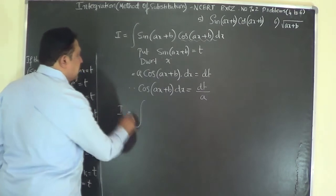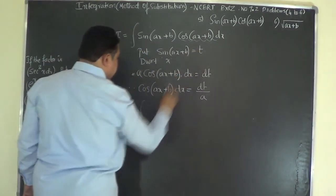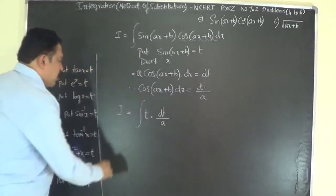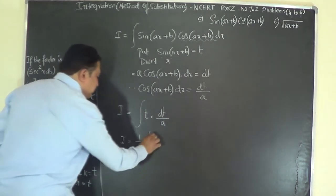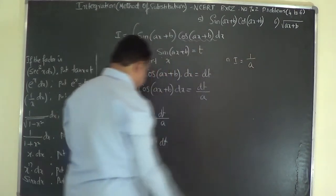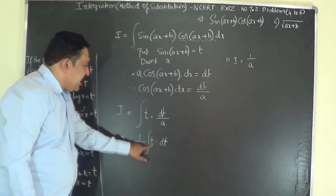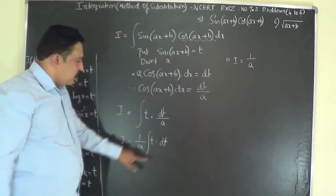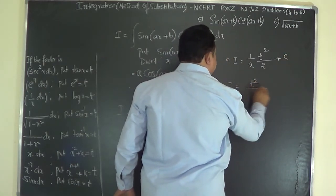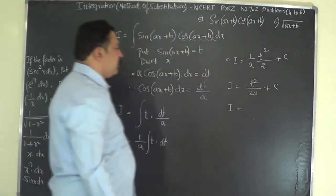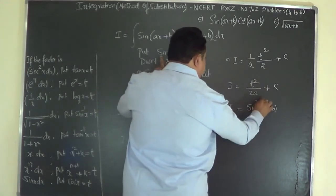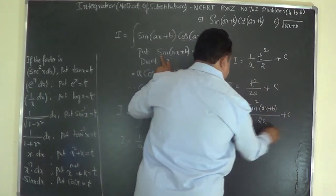So I becomes the integral of sin(ax + b) · [cos(ax + b) dx], where cos(ax + b) dx is replaced by dt/A. Since A is a constant, take it outside: I equals (1/A) ∫t dt. Integrating t to the power 1 gives t² / 2, so I equals t² / (2A) plus C. Substituting back, t equals sin(ax + b), giving sin²(ax + b) / (2A) plus C as the final answer.